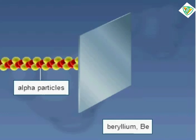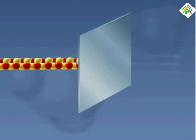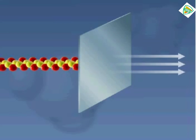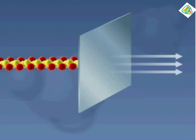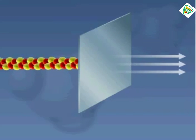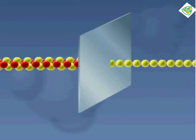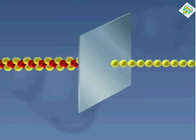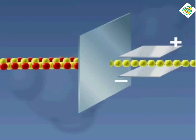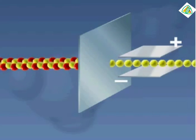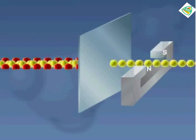The beryllium foil produced highly penetrating radiation. In a high energy setup with beryllium foil in a magnetic field, the radiation was not deflected.